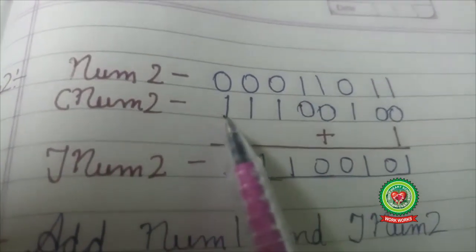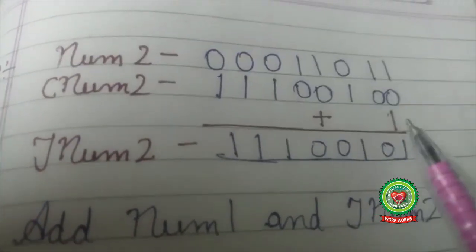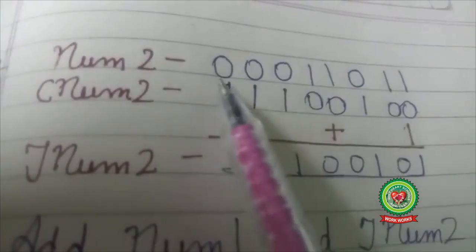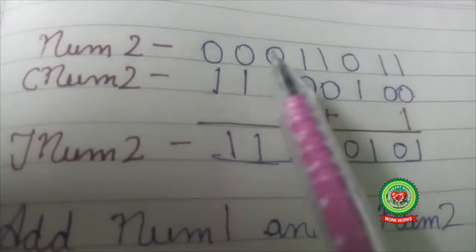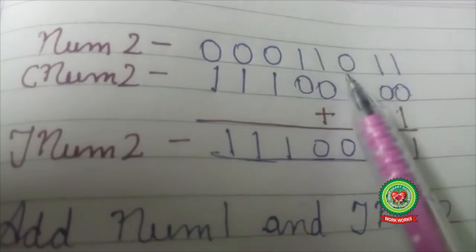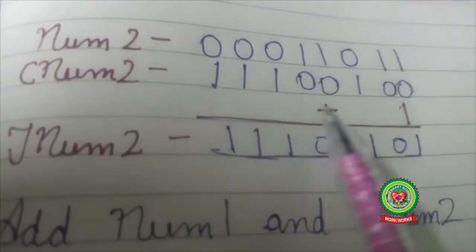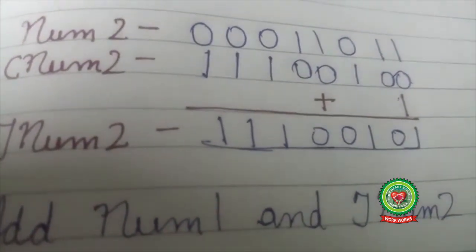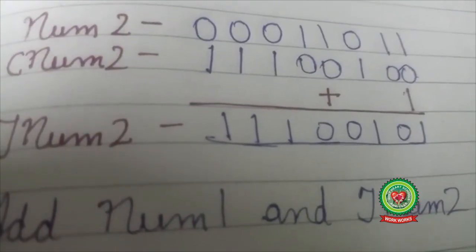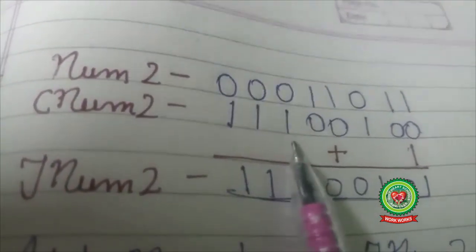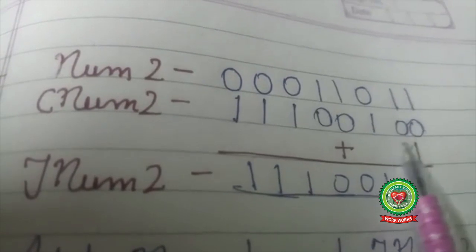First by finding the one's complement of that number and then adding 1 to the complement. So my second number is 0 0 0 0 1 1 0 1 1. First, I will find one's complement by inverting 0 to 1 and 1 to 0. So my complement is 1 1 1 1 0 0 1 0 0.